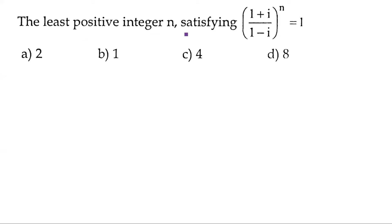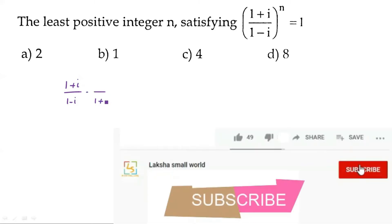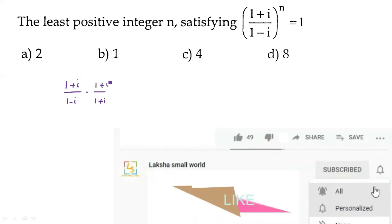The least positive integer n satisfying ((1+i)/(1-i))^n = 1. We need to find the least positive integer n. So the value of (1+i)/(1-i) — we rationalize by multiplying numerator and denominator by (1+i).